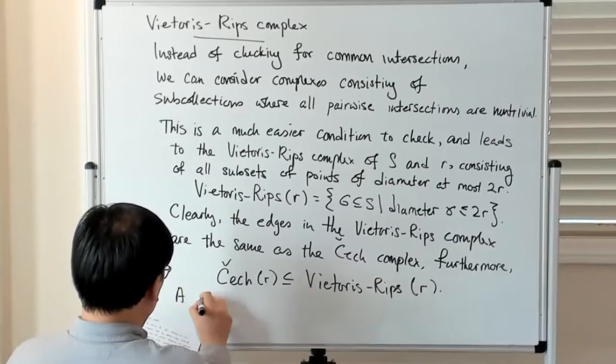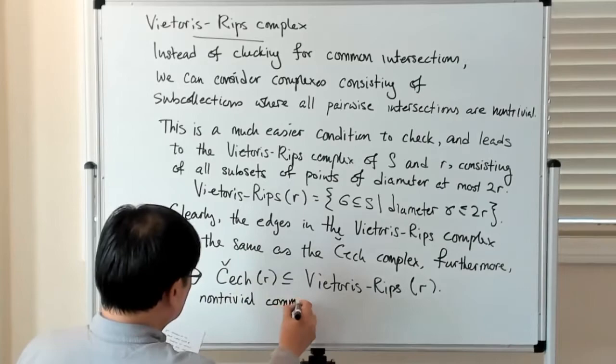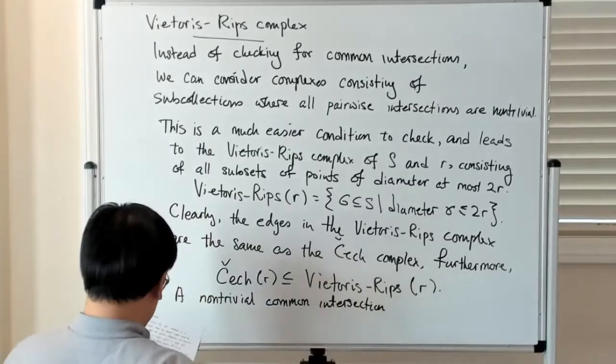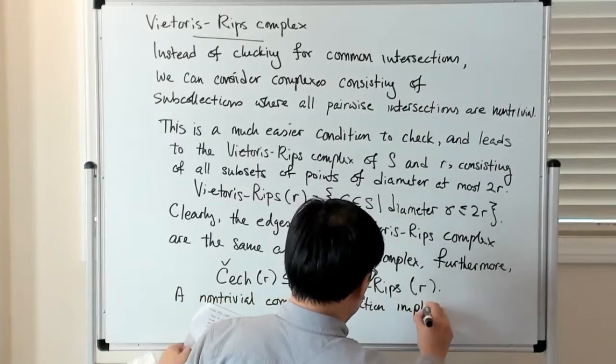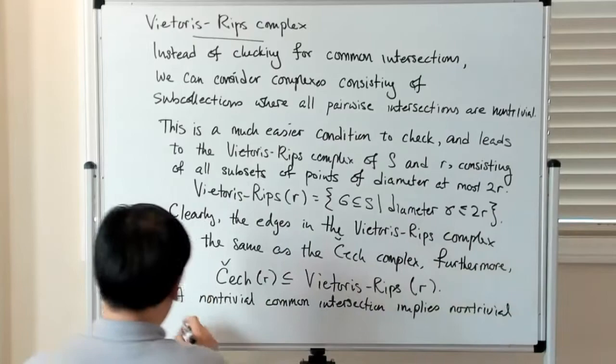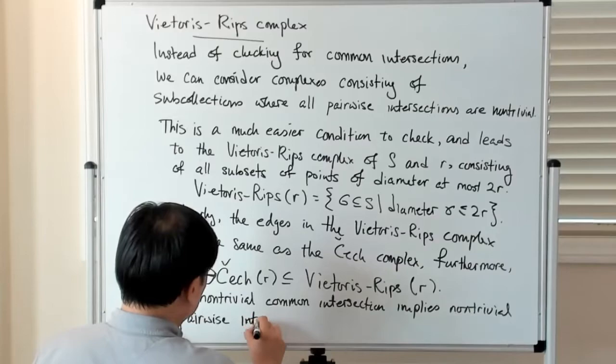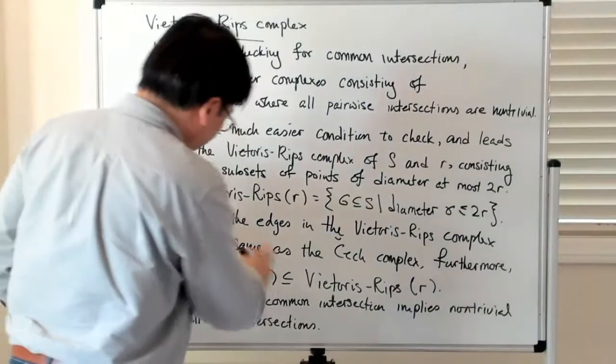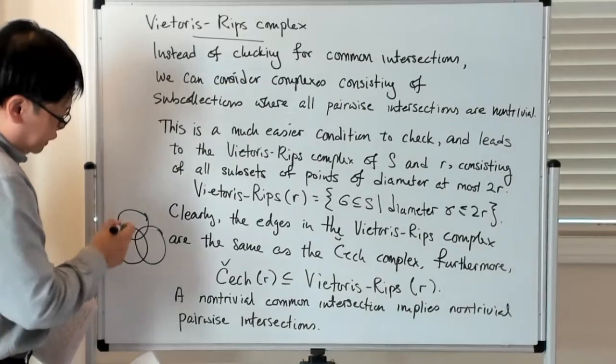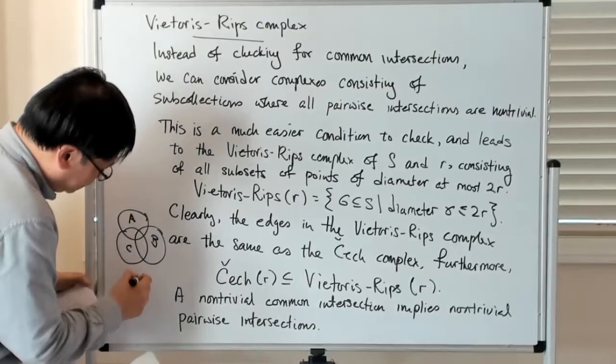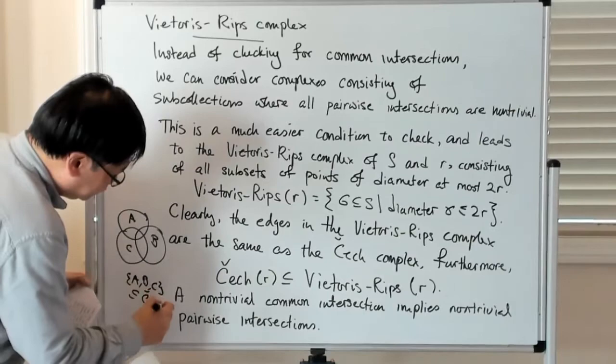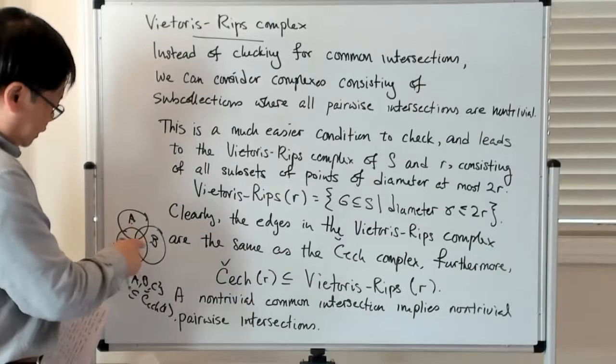So the Čech complex radius R is contained in the Vietoris-Rips complex. And of course the reason why you have this inclusion is that a non-trivial common intersection implies non-trivial pairwise intersections. Because if you recall, the condition that something is in the Čech complex is that, imagine if you had three sets.